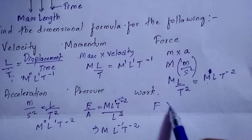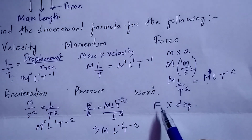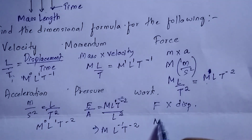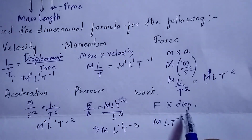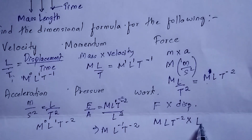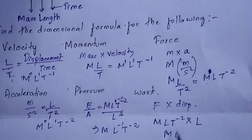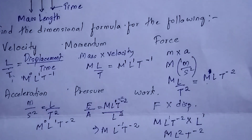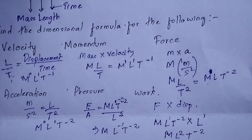Next is the dimensional formula for work. Work is force into displacement. Force is MLT⁻², and displacement is measured in meters so it is L. The dimensional formula for work: M is 1, L is 1+1 so L², and T is minus 2. So the dimensional formula for work is ML²T⁻².